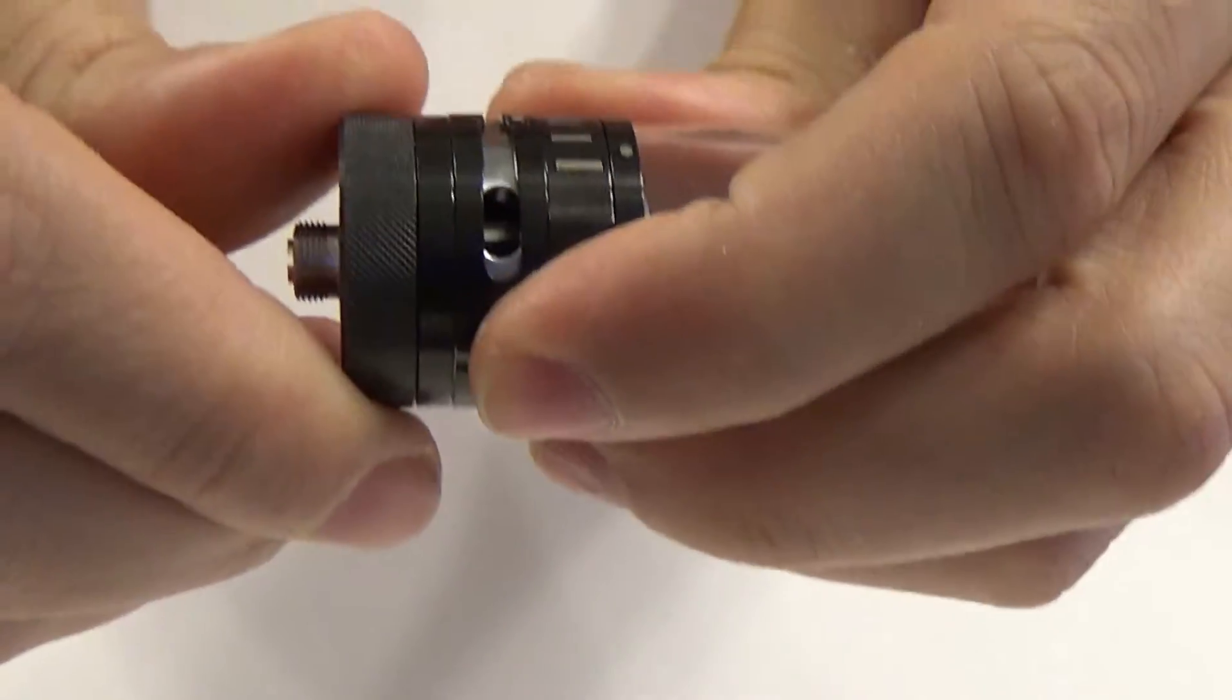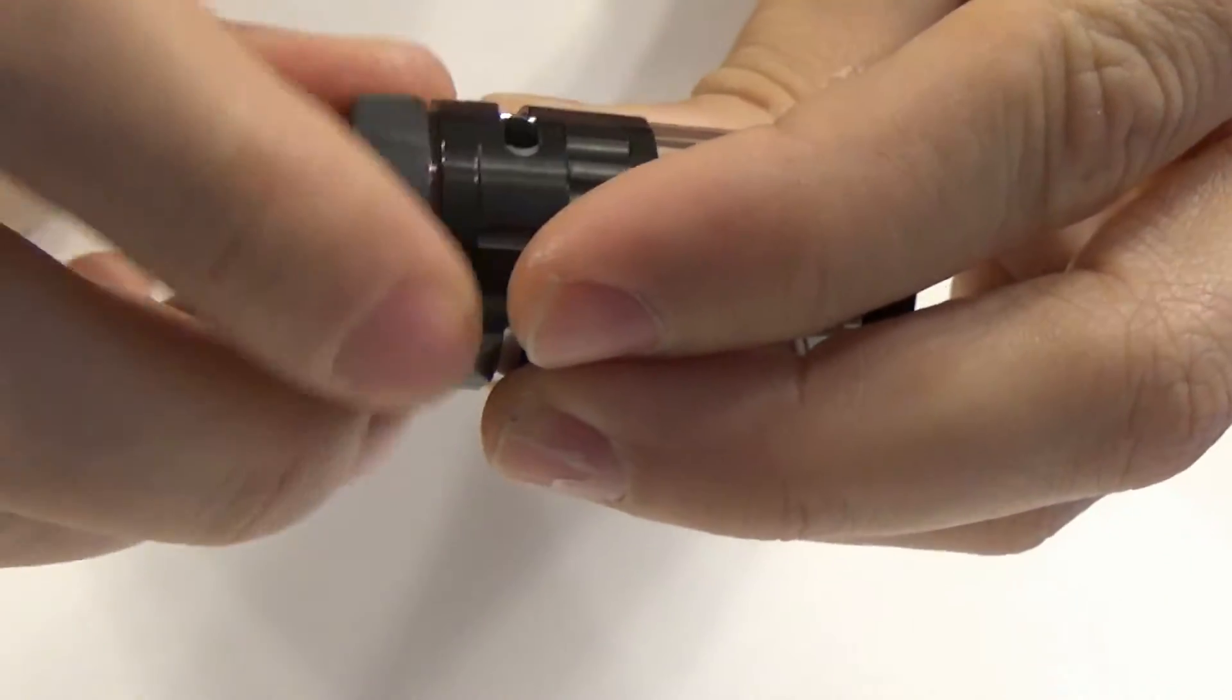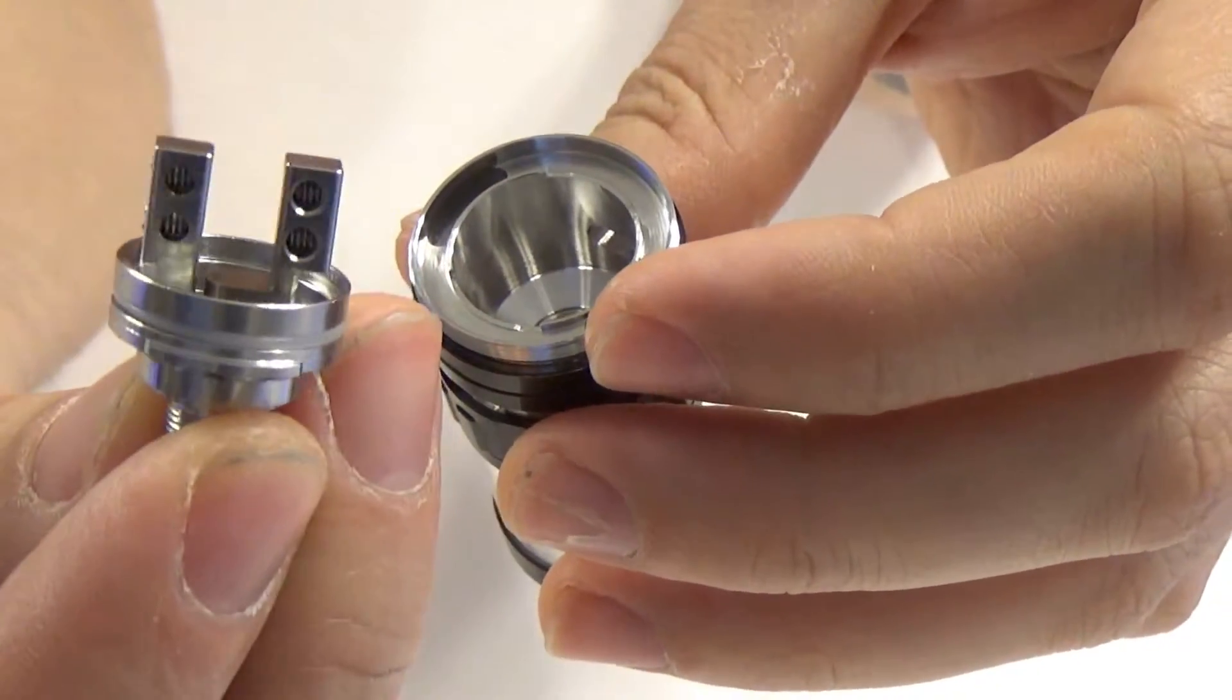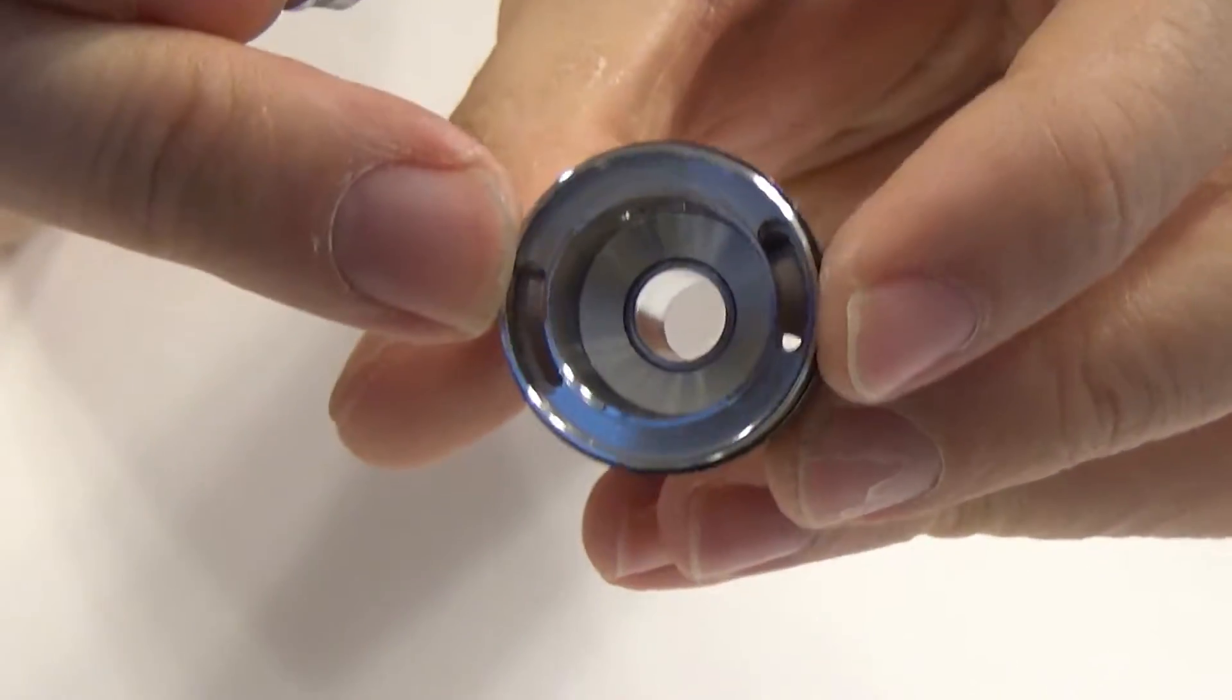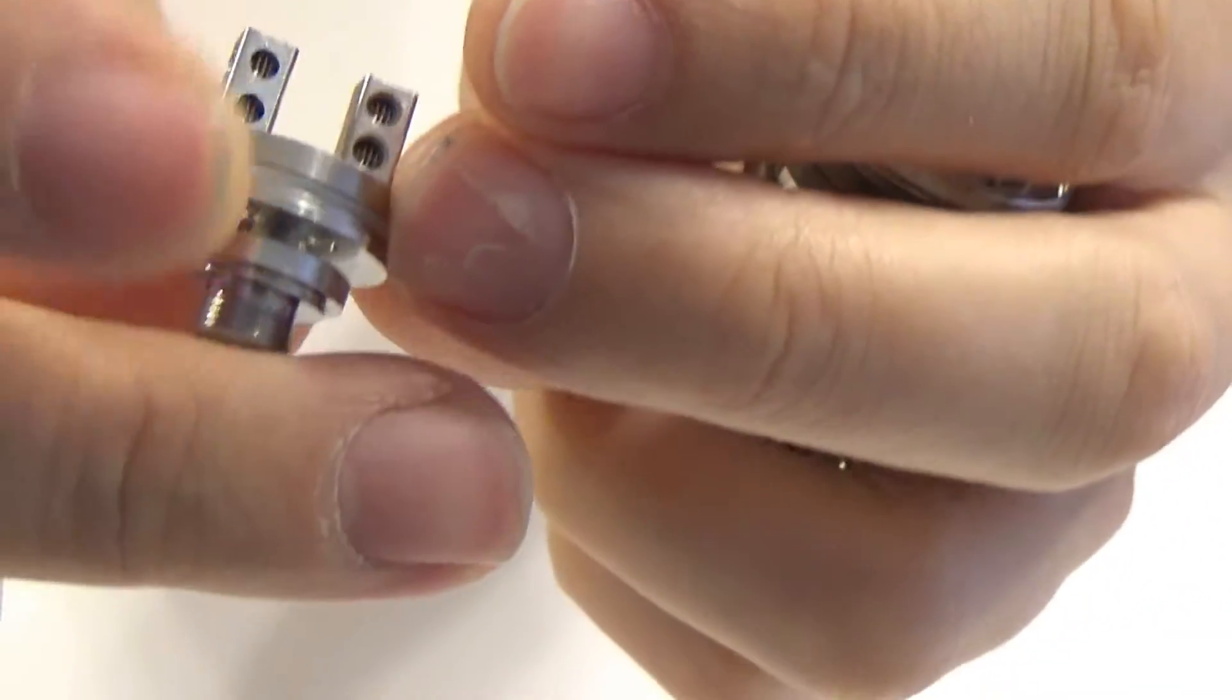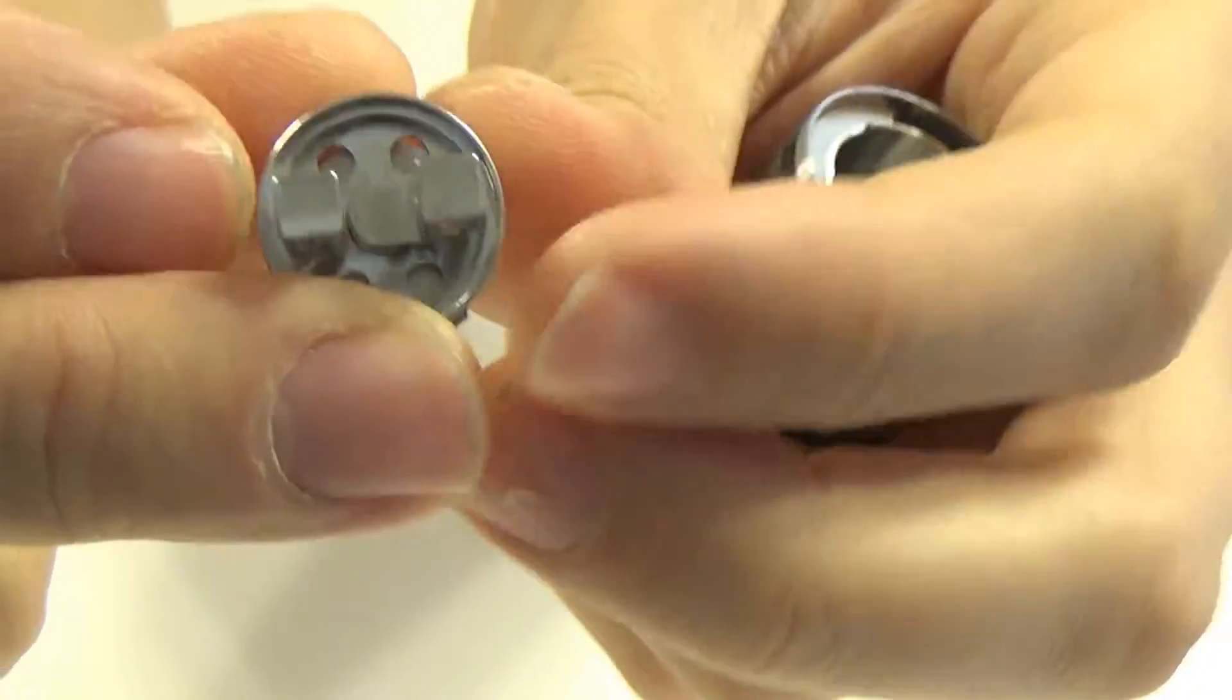Now the bottom works a little bit like the Avocado RDTA, where the bottom unscrews. The deck is removable without filling the tank. There is the deck. The juice actually comes through these two slots here in the side, come past this main deck, and go underneath to the four holes through the bottom. So when you wick it, you just want to make sure those holes are covered up with your cotton.